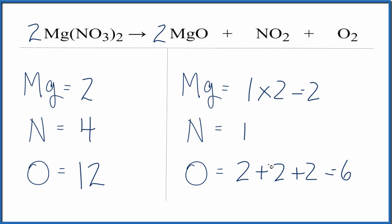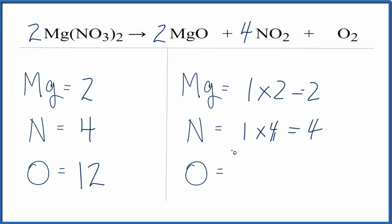Let's fix the nitrogens. I'll put a four in front of the nitrogen dioxide — one times four gives me four nitrogens. Now I'll update my oxygens: I have the two here plus four times two, which is eight, plus the two here. Two plus eight is ten, plus two is twelve. That works out.